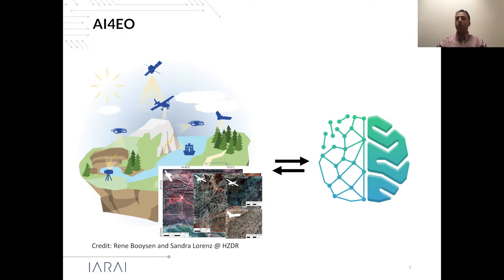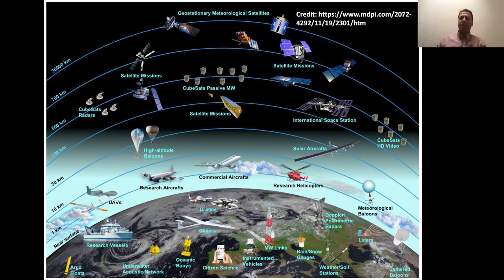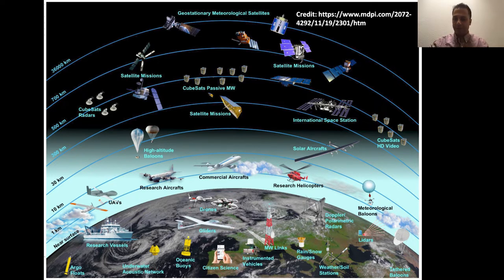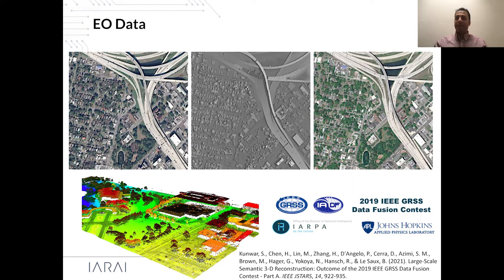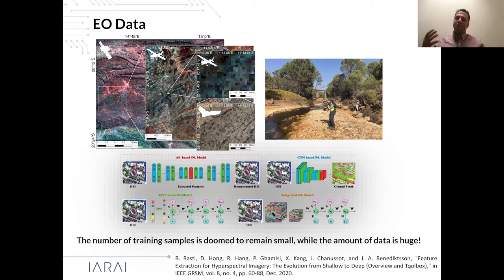We are now in the era of massive data acquisition in remote sensing. The number of platforms for producing remote sensing data has sharply increased, coupled with new platforms such as unmanned aerial vehicles or UAVs producing very fine spatial resolution data. We therefore have different sensor types mounted on different platforms — airborne, spaceborne, and UAV — providing complementary information from the surface of the earth. We can develop multi-source data fusion approaches to make the most of these datasets.